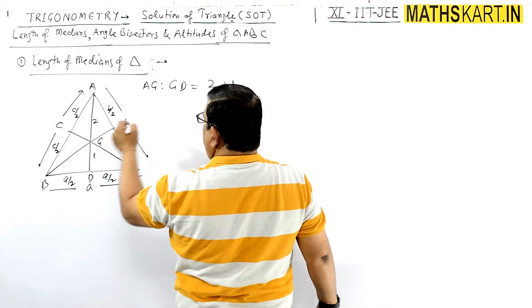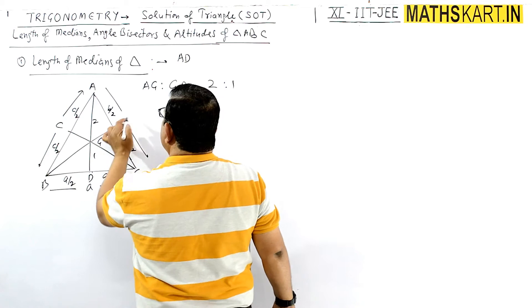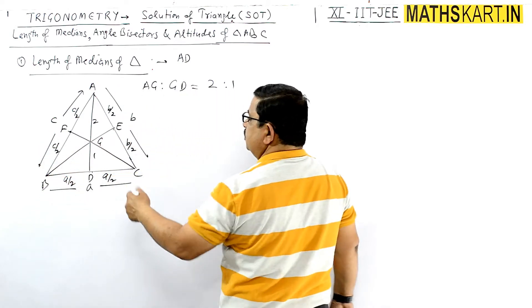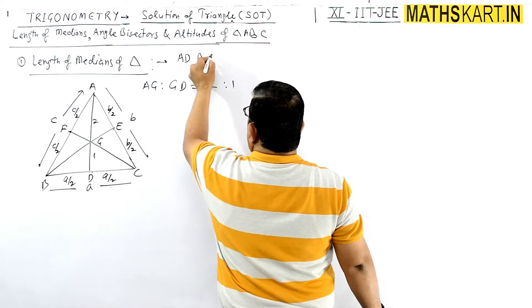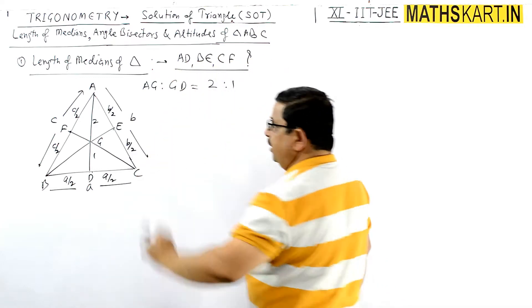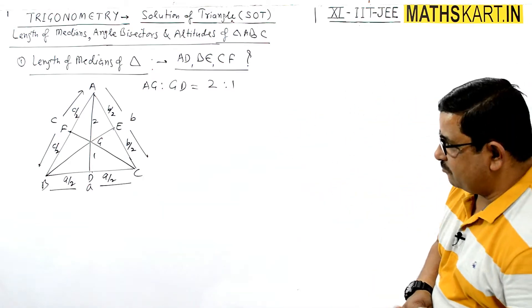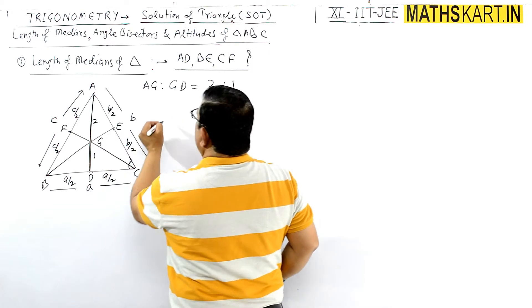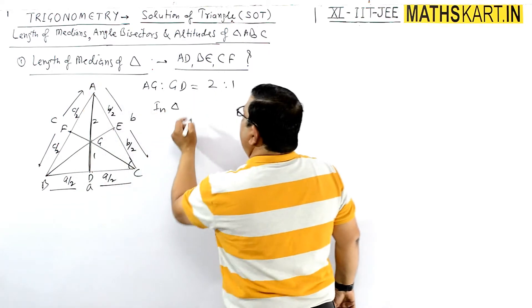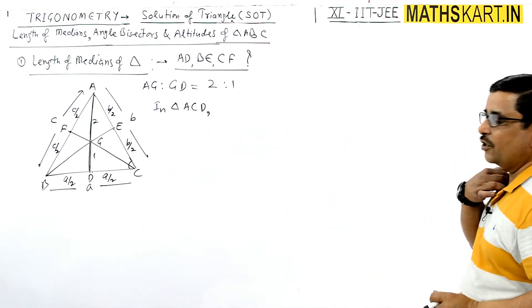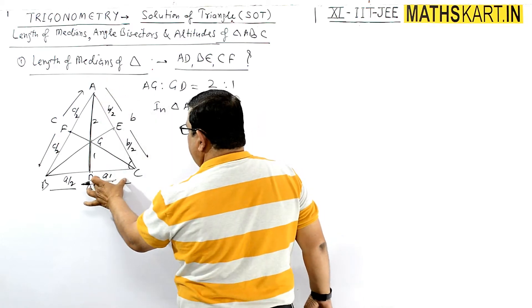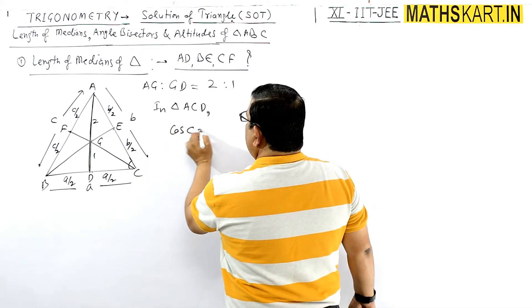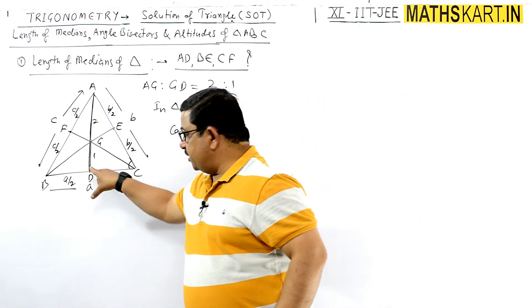We have to find out the lengths AD, BE, and CF — the three median lengths. To find AD, we use triangle ACD and apply the cosine formula. The side involved is A/2 (half of side a), and we use cos C in triangle ACD.